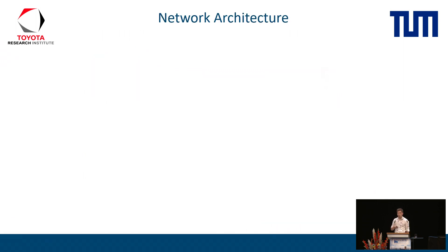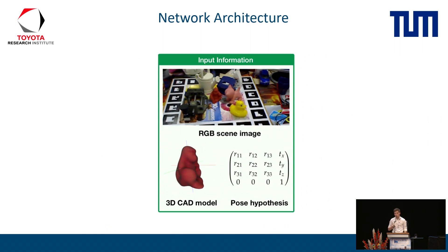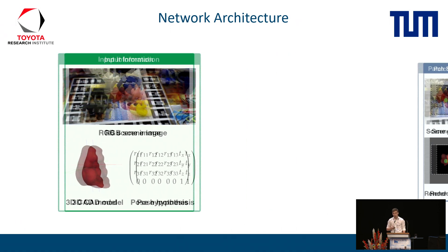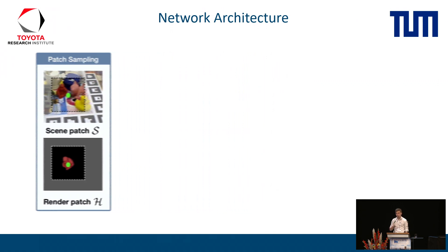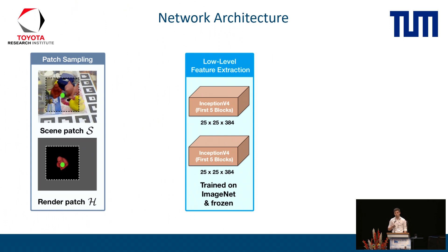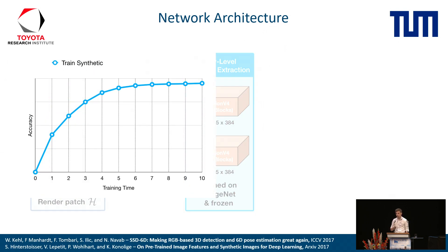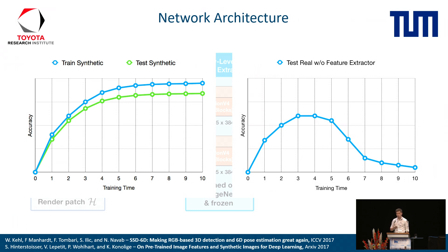Next, I want to describe the network architecture and explain our design choices. We take an RGB input scene, a 6D pose hypothesis, and the 3D model of the object. Then, we render the model and crop patches from the scene and the rendering. We choose a crop size depending on the object's diameter to ensure that the object is always fully visible in the cutouts. Afterwards, we send both patches to a pre-trained feature extractor — specifically the first five layers of Inception, initialized with ImageNet weights and frozen during training. Since we train on synthetic data only, freezing the feature extractor was essential to bridge the domain gap between synthetic and real data.